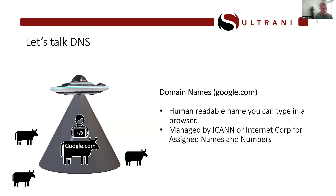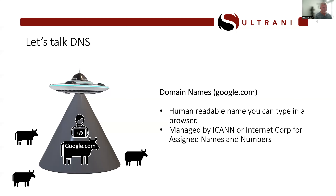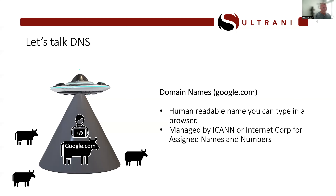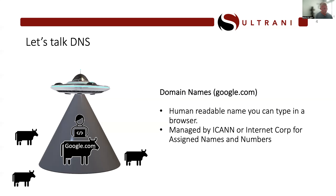Like any good leader, ICANN distributes the work. They hand off authority — asking people for money for the ability to manage parts of this process. The actual registration of names and managing who owns them is handled by corporations. Under ICANN you have other organizations, both profit and nonprofit, and many for-profit entities beneath them that let you register or find a domain name. Your adversary will take advantage of that fact in ways you can detect once you understand the behind-the-scenes processes.